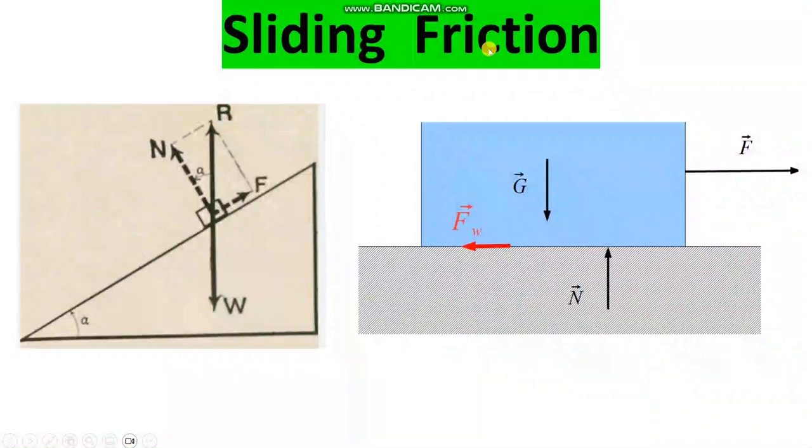Sliding friction. Sliding friction means two objects, this one object and this is other. This wants to move in this direction and this is at rest. Here this friction, here sliding friction. This is the weight and this is the reaction. If the slope level here, this is the weight, this is the reaction. This is the normal force. The friction will be at this side, sliding friction as a resistance.